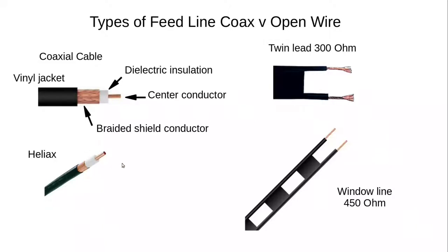The cable known as heliax is still coaxial cable, but it cannot be bent much — it is a rigid type of coaxial cable with the least amount of losses. The center conductor is composed of a tube because, as the RF energy is carried on the surface of the conductor, there is no need for solid material at the center. The shielding is a more rigid, ribbed copper or aluminum material that doesn't bend much.